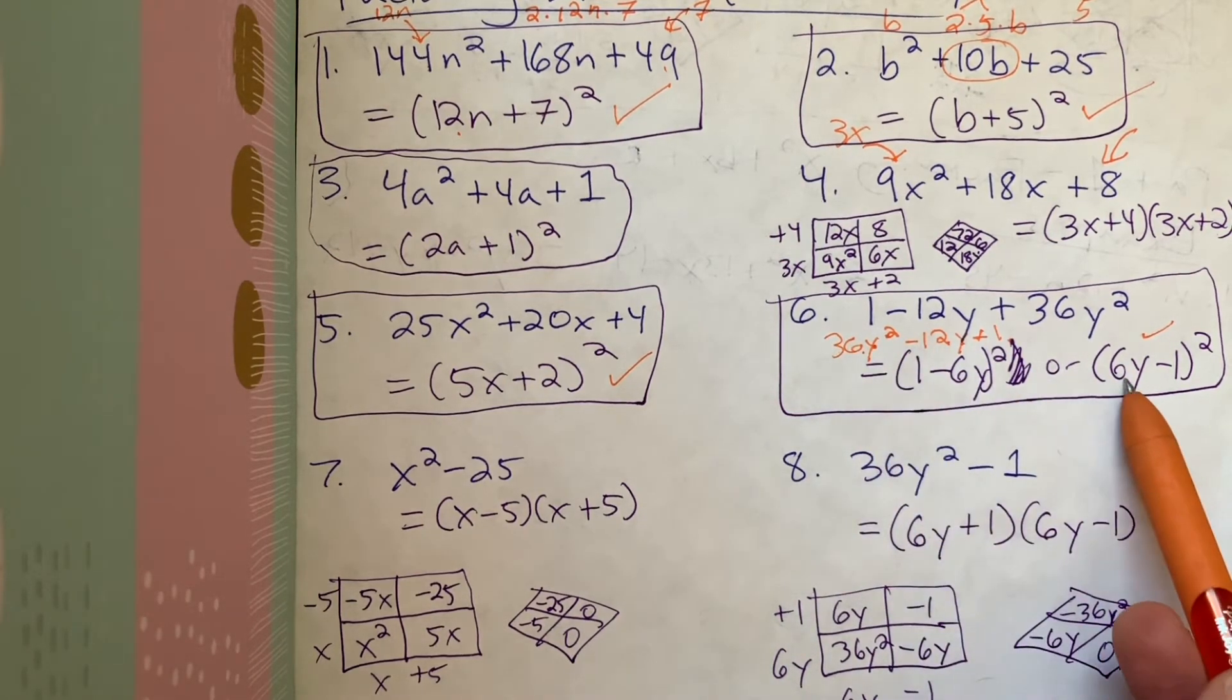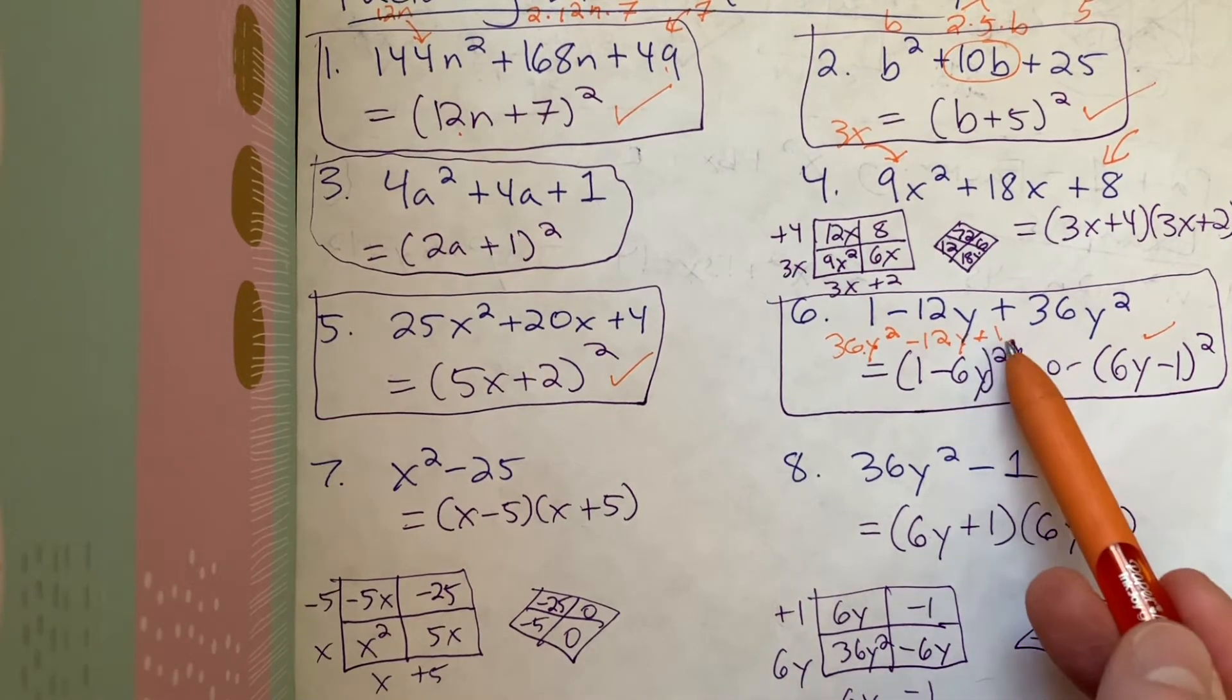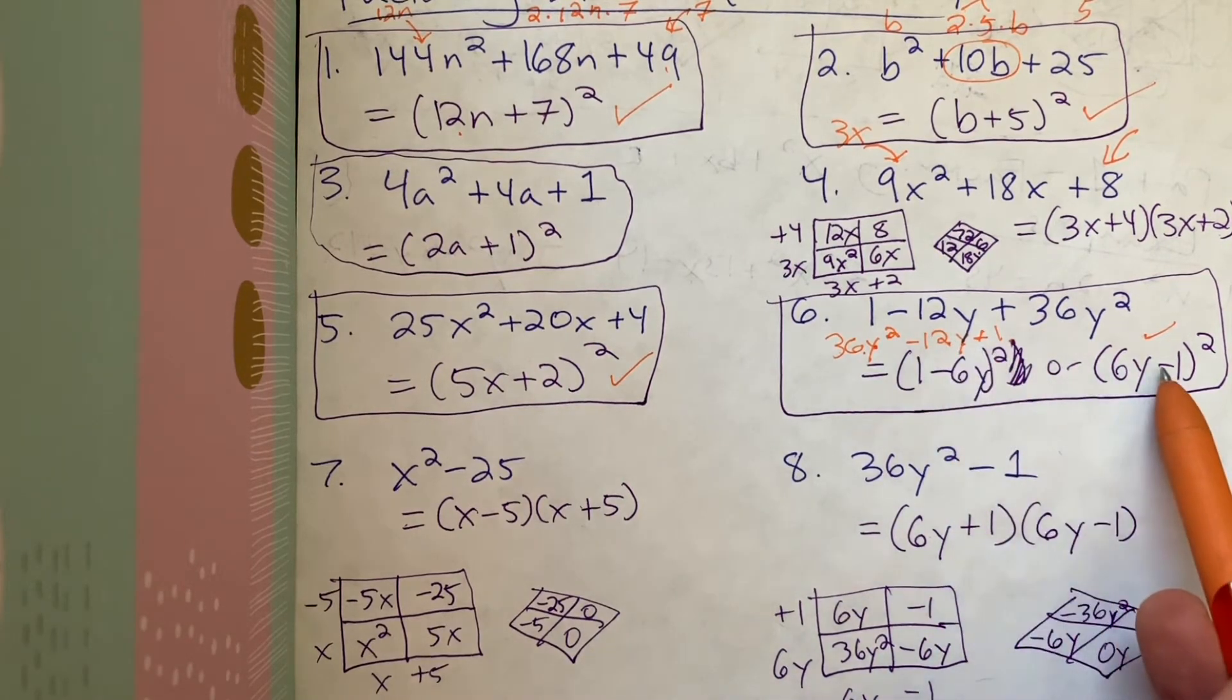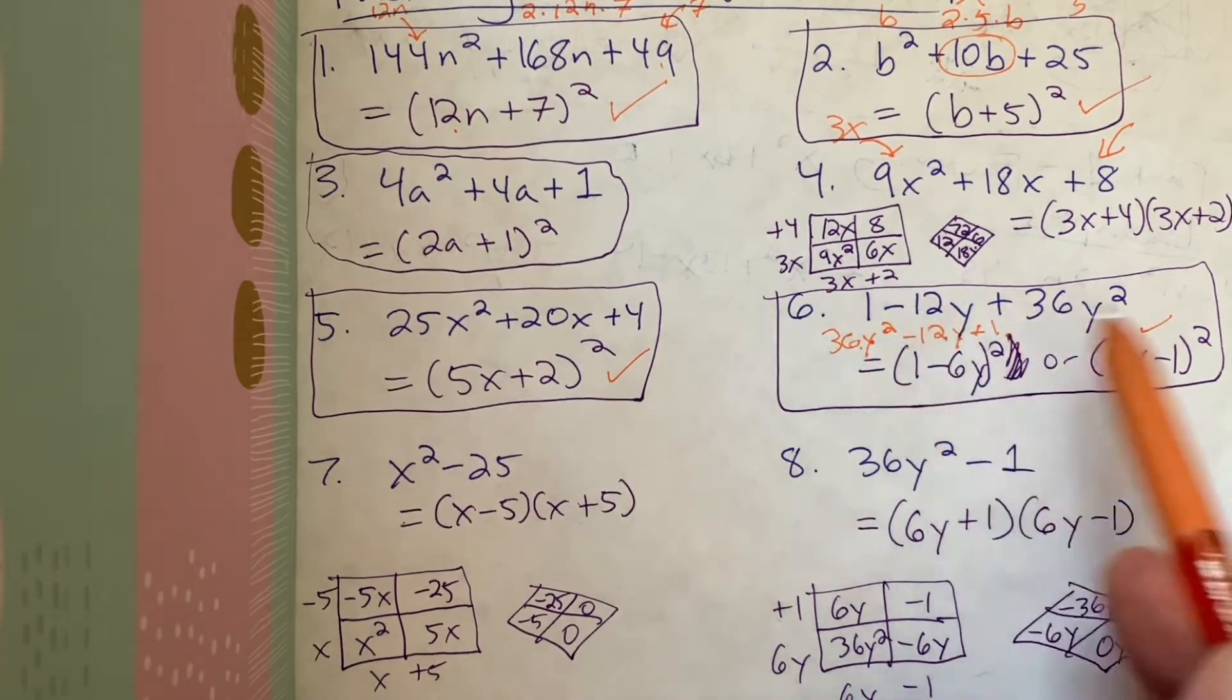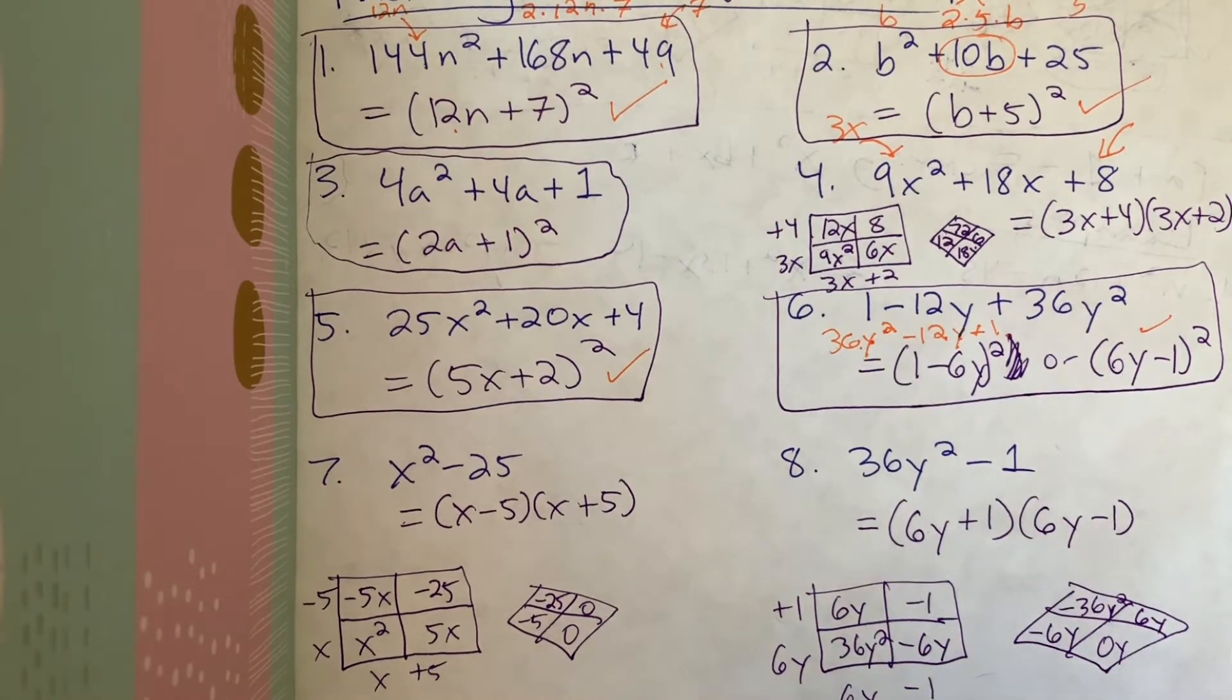Square root of 36y squared is 6y. Square root of 1 is 1. But our term is negative. Let's make it negative 1. We could prove this. We could actually put both these into a generic rectangle, and we would return the same answer. And I just wanted to point that out. More than one way to factor these things.